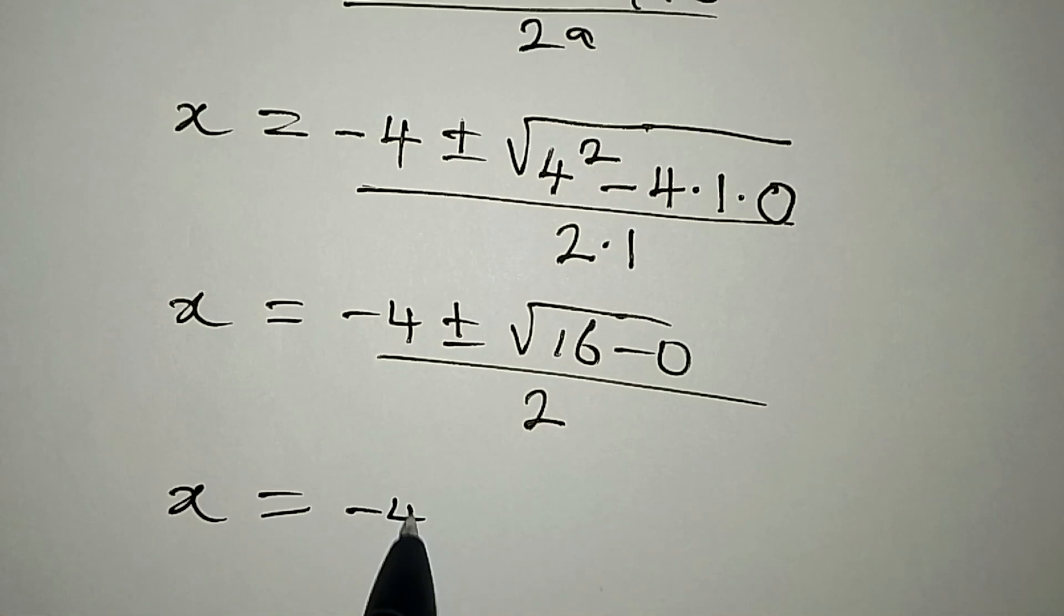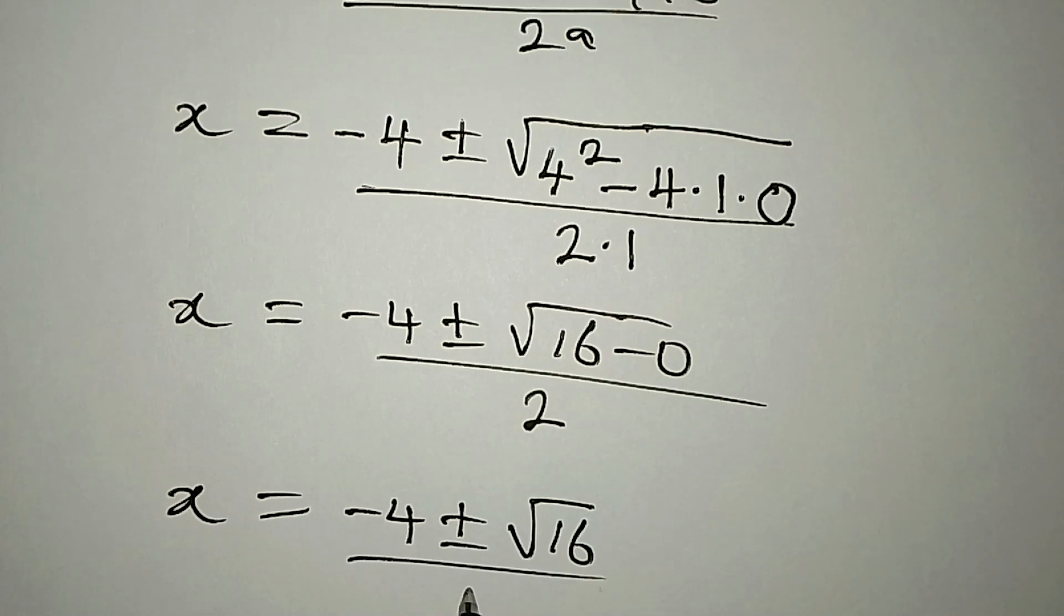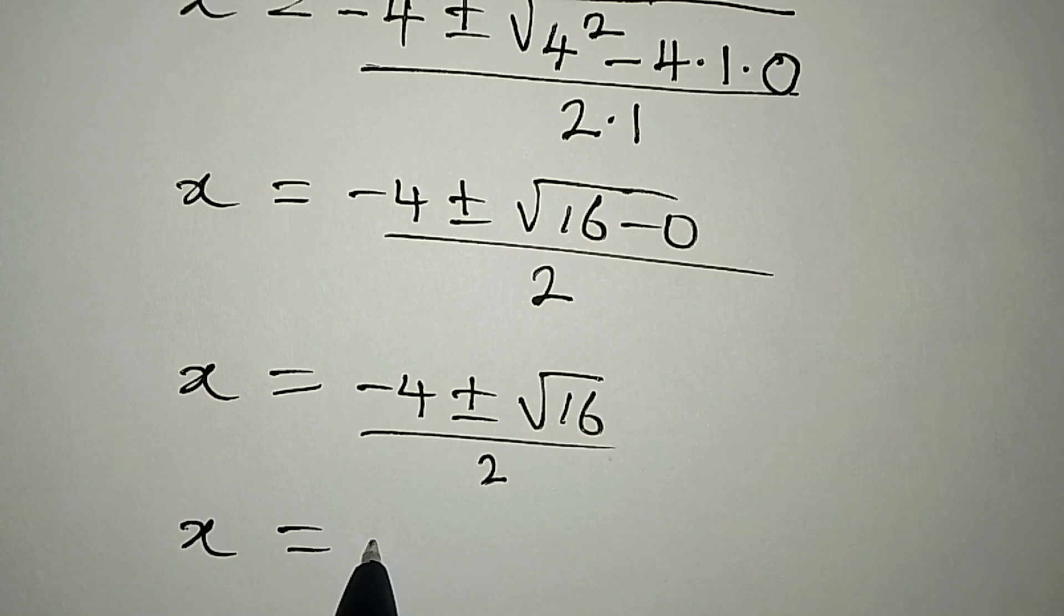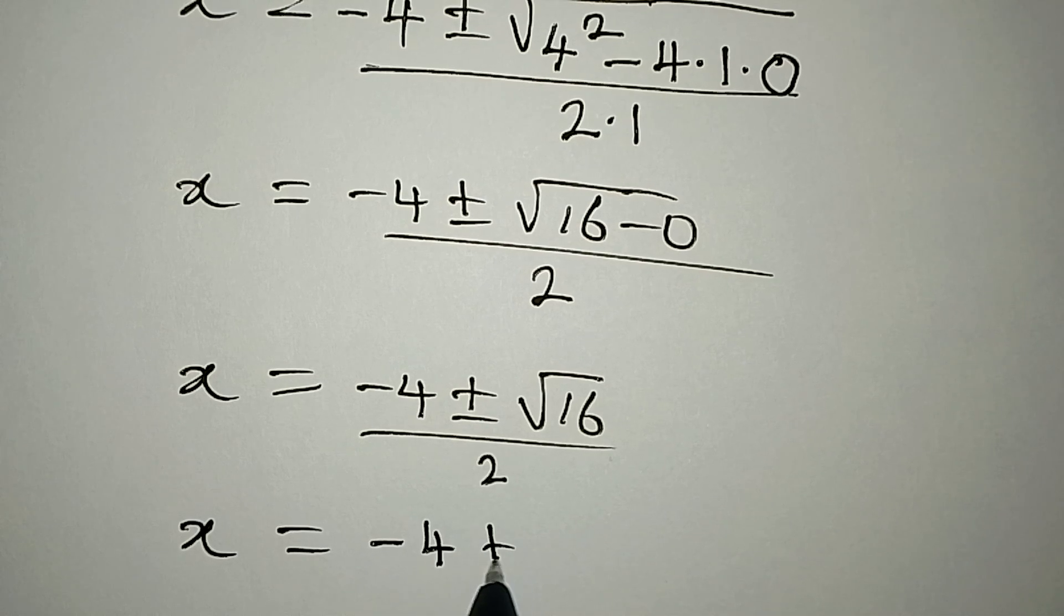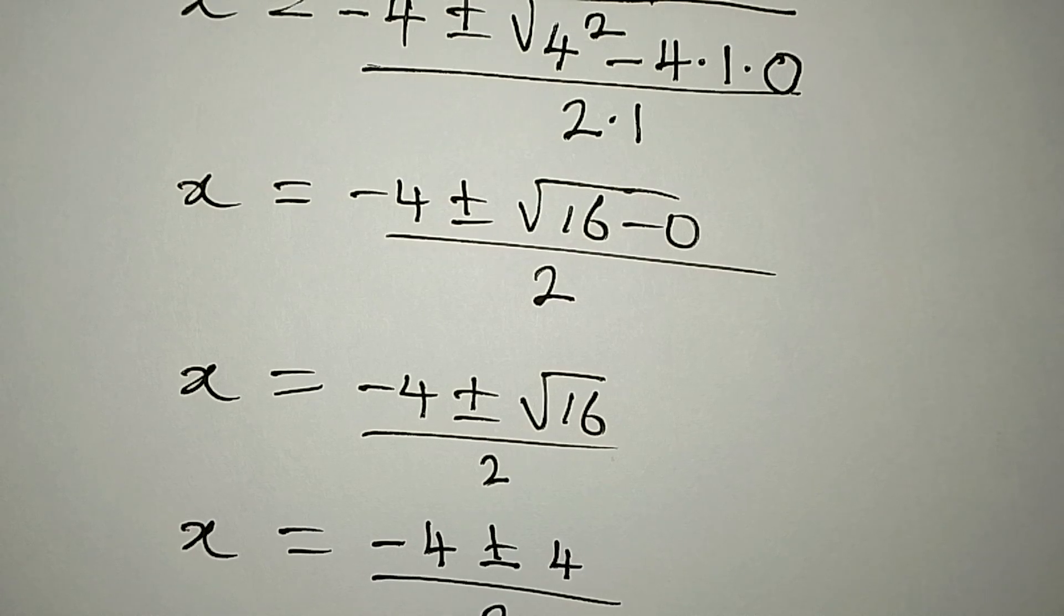We are going to continue so that x will be equal to minus 4 plus or minus we have square root of 16, and this is over 2. Let's continue so that x will be equal to minus 4 plus or minus square root of 16 will give 4, and this is over 2.